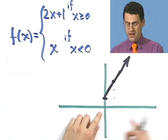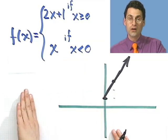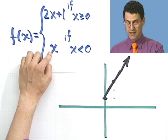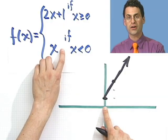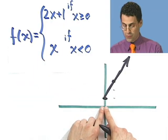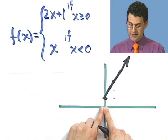Now what happens when x is less than zero? That's this region here. Well then I'm going to graph a completely different function. I'm going to graph the function f of x equals x. Well that has a y-intercept zero because it's x plus zero. And the slope is 1. So that means that I go 1 over and 1 up.